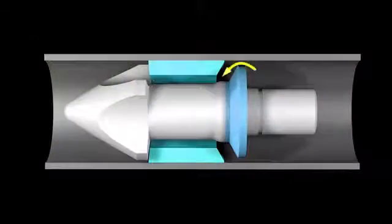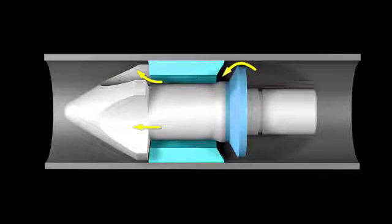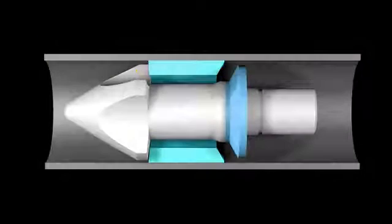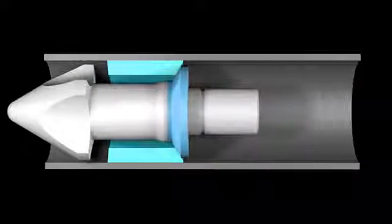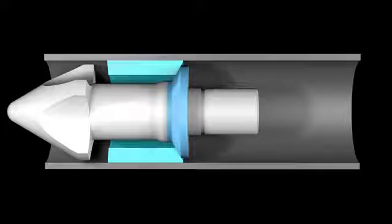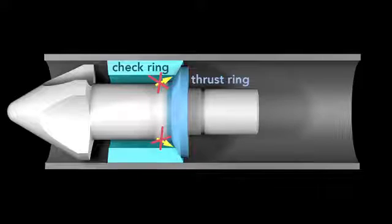The molten plastic flows past the front of the screw through indentations or flutes. When there's enough plastic to fill the mold at the front of the screw, it rams forward like a plunger, injecting the plastic into the mold. The plastic cannot flow backwards, because when the screw pushes forward, a check ring is shoved against a thrust ring to block the backwards movement of the molten plastic. This forces the plastic into the mold.